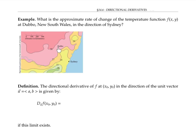As we move from Dubbo towards Sydney, the temperature is decreasing to 27, here's 24, and so on. If we want to find the approximate rate of change of the temperature function f(x, y) at Dubbo going in the direction of Sydney, we can approximate it with the average rate of change.